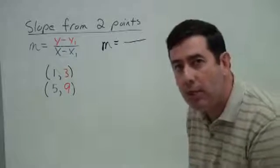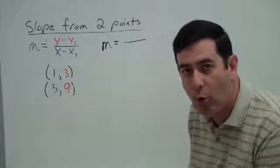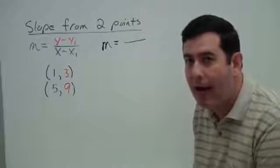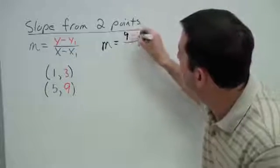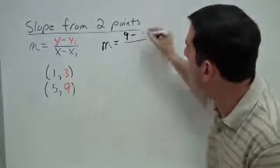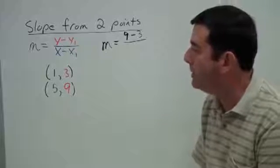But once I choose an order, I have to then be consistent with that order. The top of our fraction is the y's, so let's take 9 minus the other y, which was 3. That's the difference of our y's.